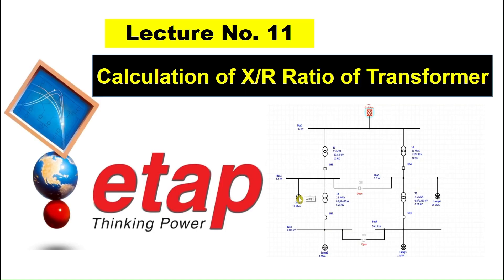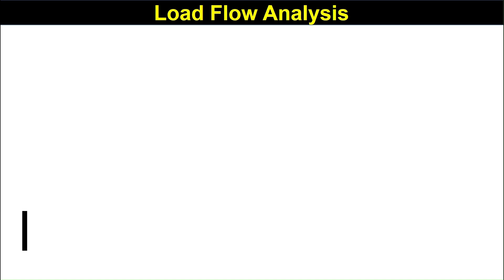Sometimes the manufacturer's data sheet is not mentioning the %X or %R ratio of a transformer. In that case, how we find the X by R ratio of a transformer? We are going to see this by using a manual calculation and we will then compare with the ETAP results. Let us see.